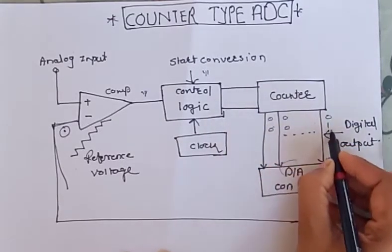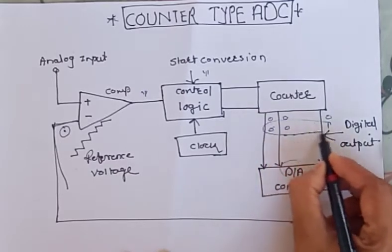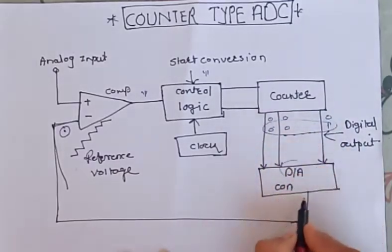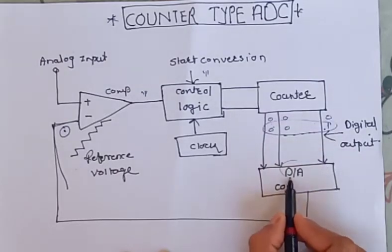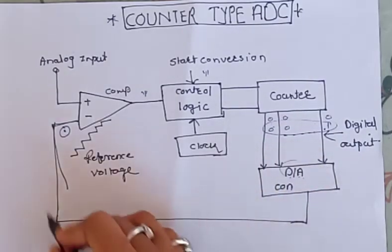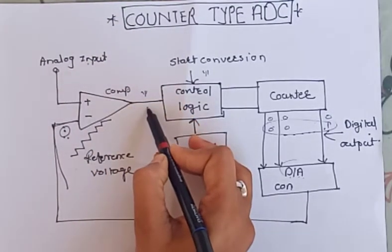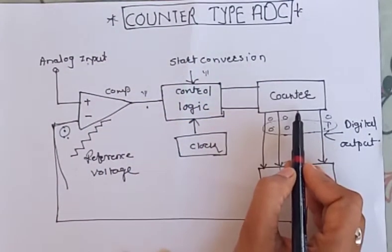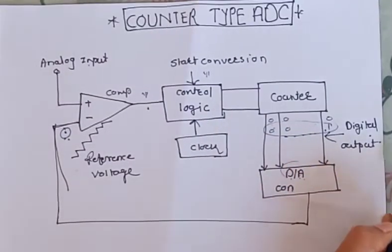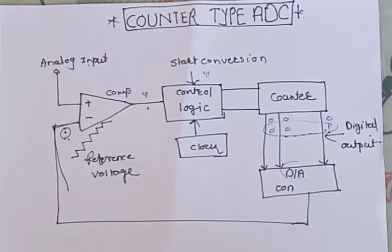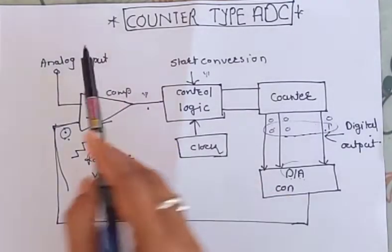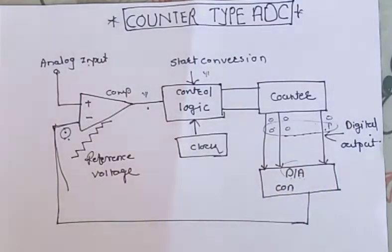Suppose the comparator output is 1 — that 1 is recorded by the counter and the output becomes 001, for example. Again, the analog form of this present output, converted by the digital to analog converter, is applied for comparison. Accordingly, the next bit is counted by the counter and the final output is provided at the digital output. In this way, the analog voltage is converted into digital form using comparator and counter — this is the counter type ADC.